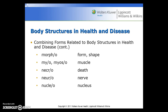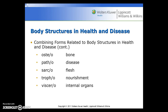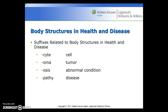Additional combining forms include: morpho for form or shape, myo/myoso for muscle, necro for death, neuro for nerve, nucleo for nucleus, osteo for bone, patho for disease, sarco for flesh, tropho for nourishment, viscero for internal organs, cyte for cell, oma for tumor, osis for abnormal condition, and pathy for disease.